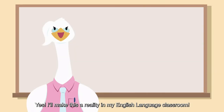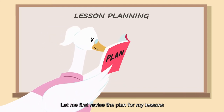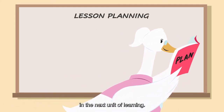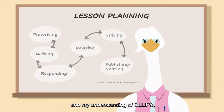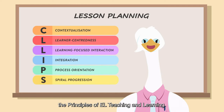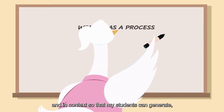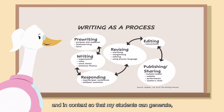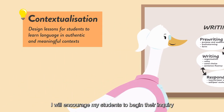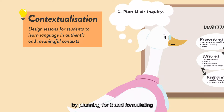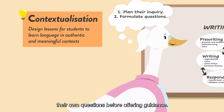I'll make this a reality in my English language classroom. Let me first revise the plan for my lessons in the next unit of learning. I'll apply my knowledge of writing as a process and my understanding of CLIPS, the principles of EL teaching and learning. This means I will teach writing as a process and in context so that my students can generate, select and organise ideas for their writing that help them meet their needs through the use of language in the real world. I will encourage my students to begin their inquiry by planning for it and formulating their own questions before offering guidance.